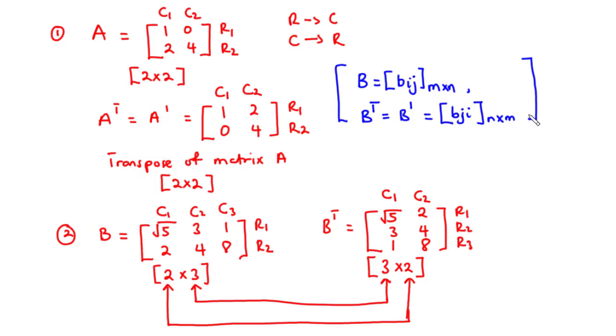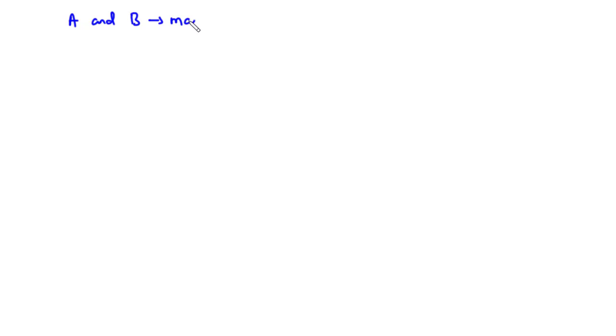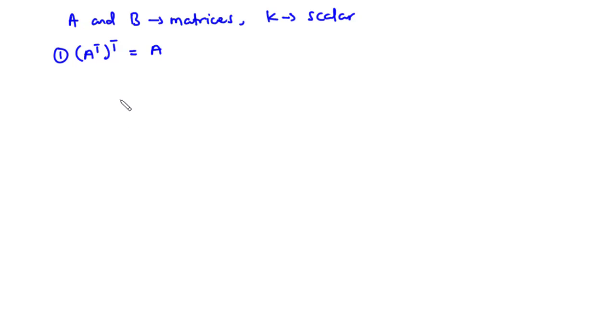Now let's discuss the properties of the transpose of a given matrix. Consider two matrices A and B of suitable sizes, and let K be a scalar. Property 1: The transpose of the transpose of matrix A is equal to matrix A itself. We can prove this — let's assume matrix A has elements 1, 2, 3, 4.